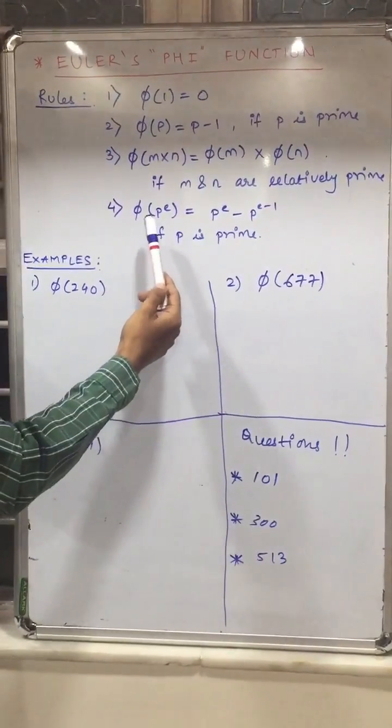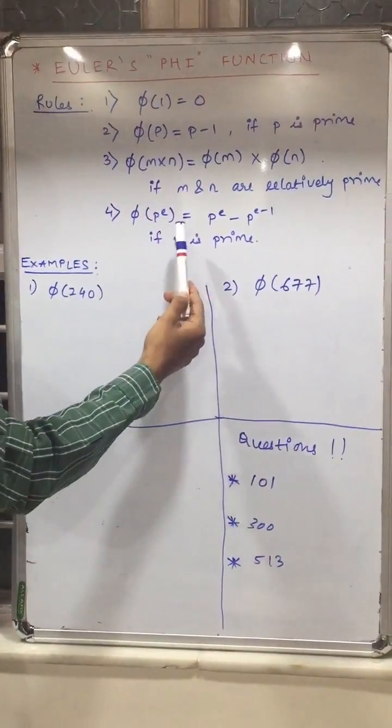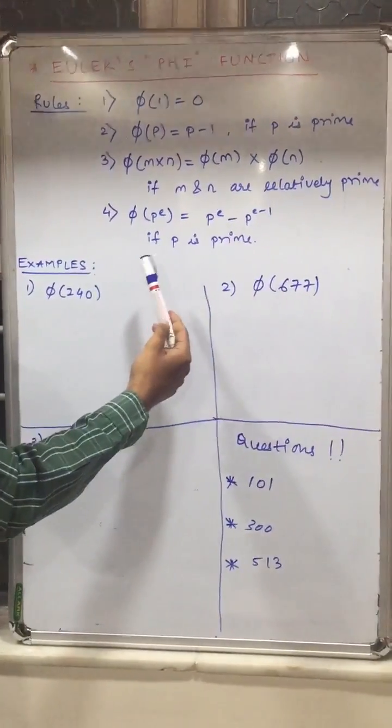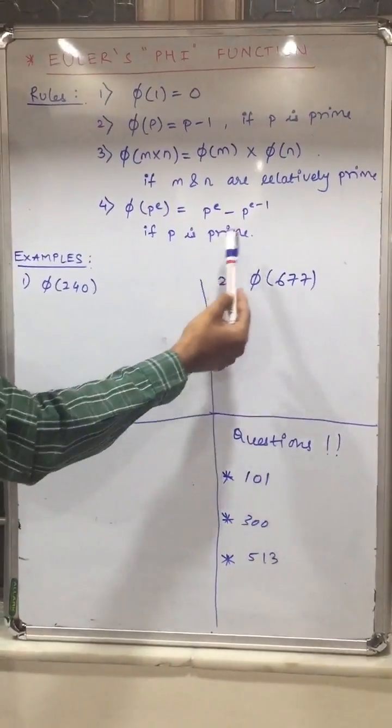Fourth, phi of p raised to e is equal to p raised to e minus p raised to e minus 1. Here, p is prime number.